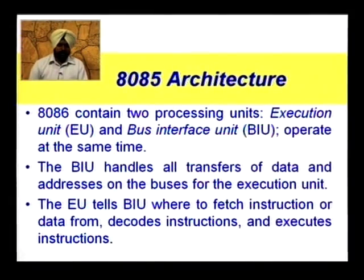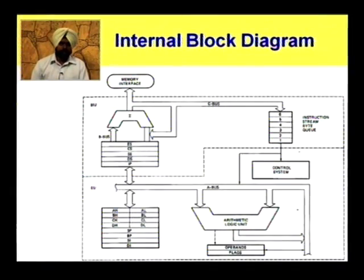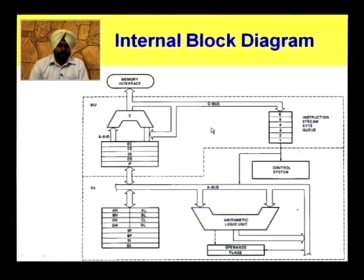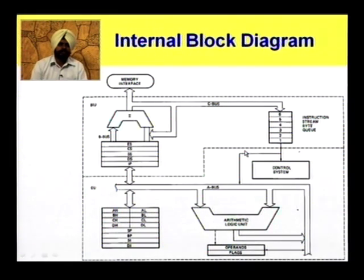The 8086 architecture contains 2 processing units — 2 parallel processing units. One is the Execution Unit and the other is the BIU (Bus Interface Unit). The whole system can be divided into 2 parts separated by a dotted line. The upper part is the Bus Interface Unit. The main use of the Bus Interface Unit is to communicate with the memory — whatever comes into and goes out of the microprocessor is handled by the BIU.